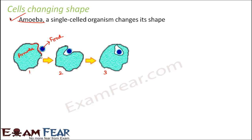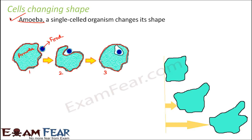If you look at the shape of amoeba, this is its shape in step 1 — and amoeba is nothing but just one cell. In step 2, the shape of the cell is somewhat different, and in step 3 the shape is different again. So the shape of amoeba is continuously changing. Amoeba changes its shape not only for intake of food but also for locomotion.